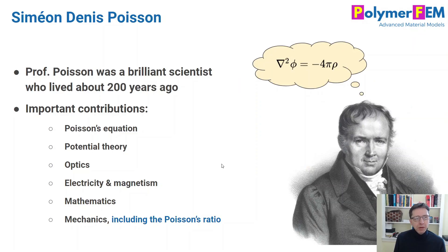So if you remember, Poisson's ratio was developed by a professor about 200 years ago who was a really productive scientist. He came up with all kinds of contributions as you can see here: Poisson's equation, very well-known potential theory, optics, etc. And one of the things he worked out was, of course, the Poisson's ratio.